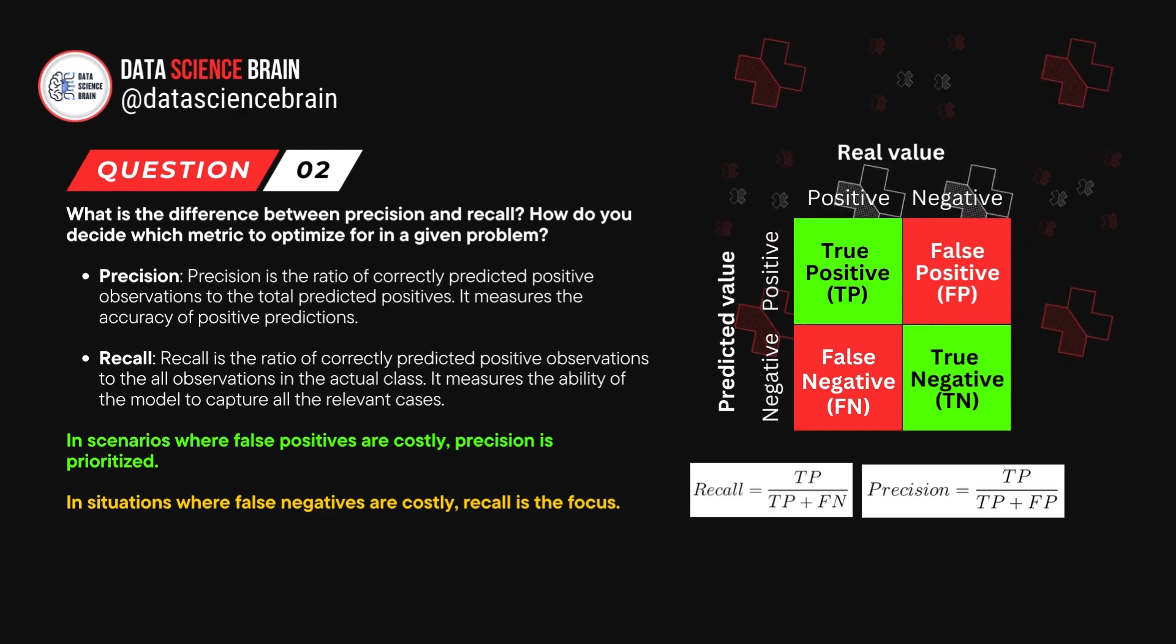For example, maybe you are classifying a tumor as malignant or not. Now in that case, false positives and false negatives are really costly. If the tumor isn't rightly classified, if the patient actually had the tumor and still the model has classified it as negative, that is a false negative.